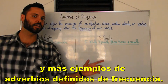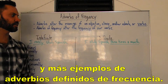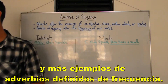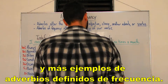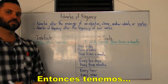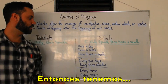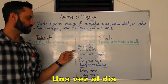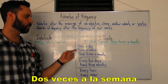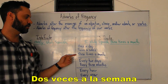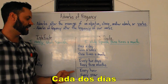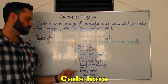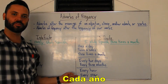And more examples of definite adverbs of frequency. So we have: once a day, twice a week, three times a month, every two days, every three months, every hour, every year.